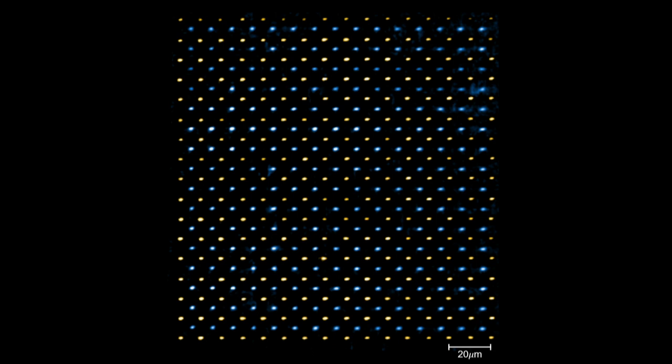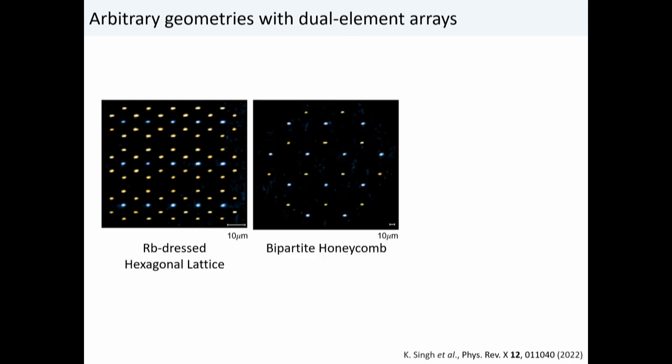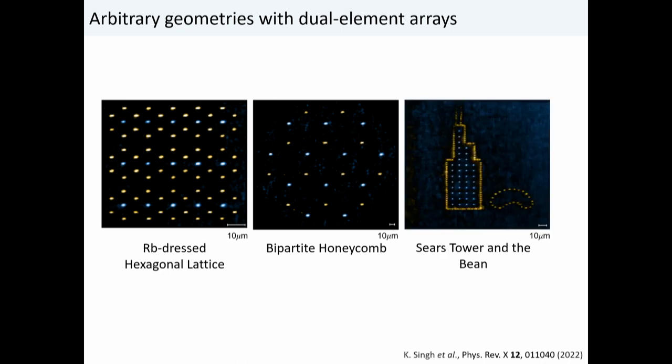Here's what typical fluorescence measurements look like: each yellow dot is a single cesium atom, each blue dot is a single rubidium atom. The spacing between cesium atoms is 10 microns, and between rubidium and cesium atoms is 7 microns — the distances we want for strong Rydberg interactions. Because our arrays are made by spatial light modulators, we can make arbitrary shapes: a rubidium-dressed hexagonal lattice, a bipartite honeycomb, and two famous Chicago landmarks — the Sears Tower and the Bean.